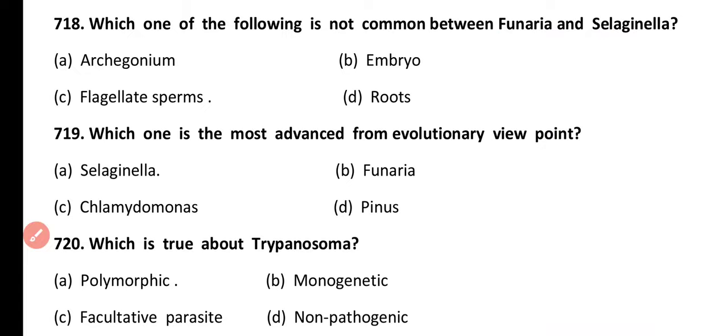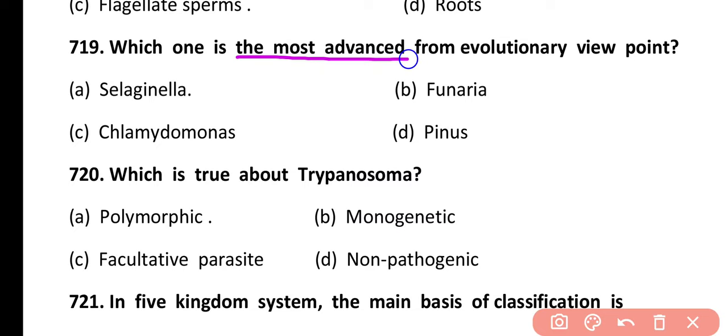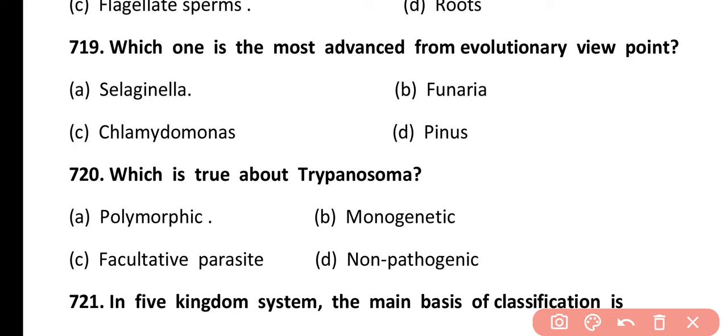Question 719. Which one is the most advanced from the evolutionary point of view? Selaginella, Funaria, Chlamydomonas, or Pinus? Correct answer is option D. Pinus is the most advanced because it is a seed-bearing gymnosperm with well-developed vascular tissue, while the remaining organisms are not seed-bearing plants.